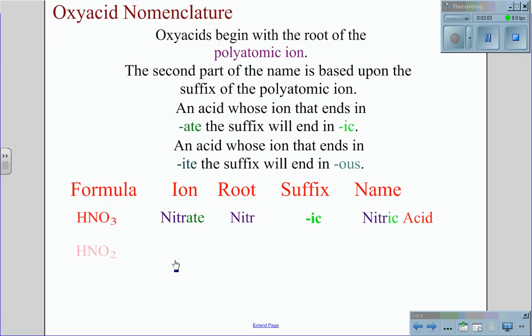For the formula HNO2, here we have the ion nitrite ending in -ite. We keep the root N-I-T-R. The suffix will be -ous because of the -ite ending, and we get the name nitrous acid.